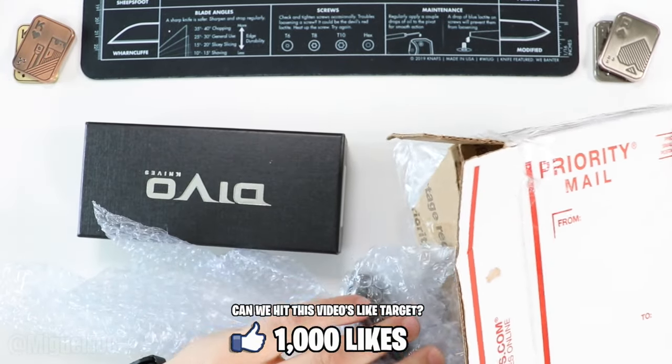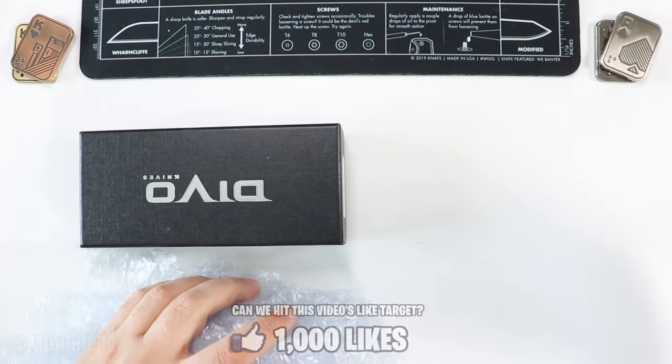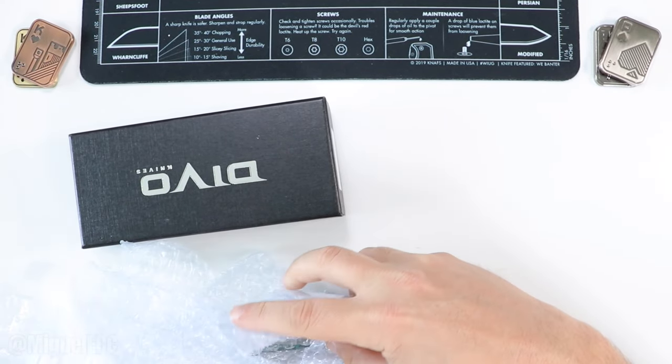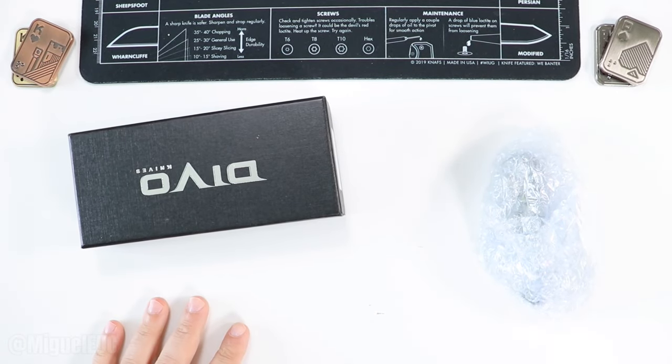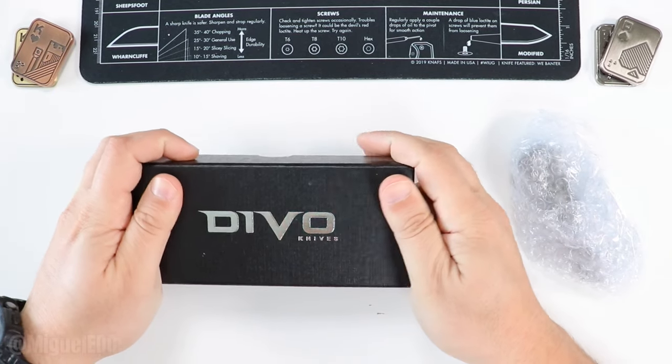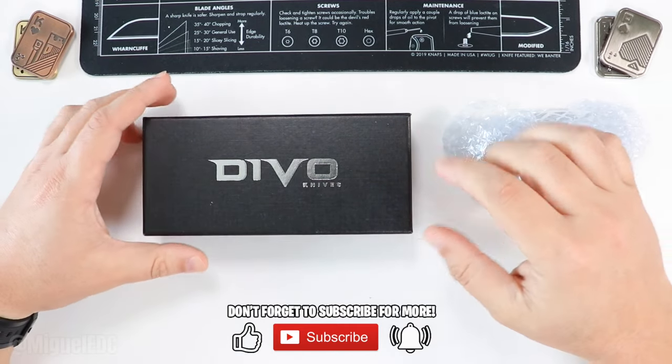Boom, check this out, we got quite a lot going on here. Looks like two knives, I'm in for a real treat. We have a knife here and first of all we have the Devo Knives box. Let's check this one out if you guys are ready.